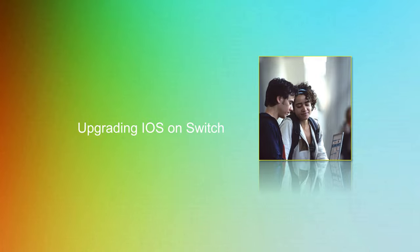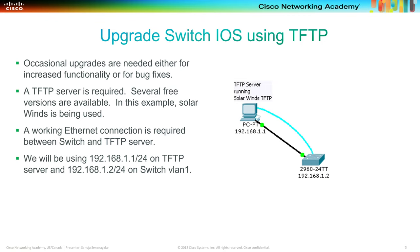The first thing we're going to look at is upgrading IOS on a switch using TFTP, also known as Trivial File Transfer Protocol. Occasional upgrades are needed either for increased functionality or bug fixes. A TFTP server is required and several free versions are available, including SolarWinds, TFTP open server, and Spiceworks. A working Ethernet connection is required between the switch and the TFTP server.